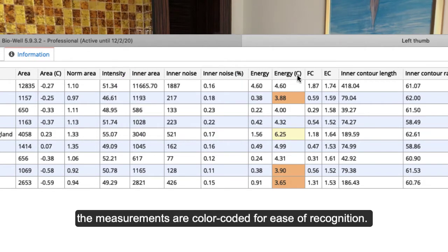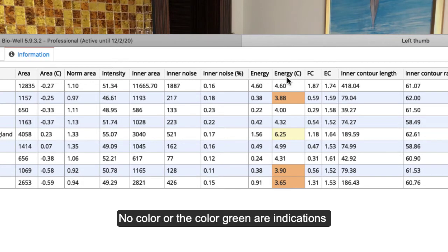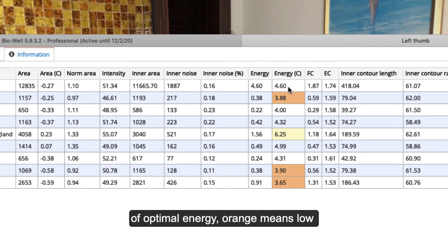In this table, the measurements are color-coded for ease of recognition. No color or the color green are indications of optimal energy.